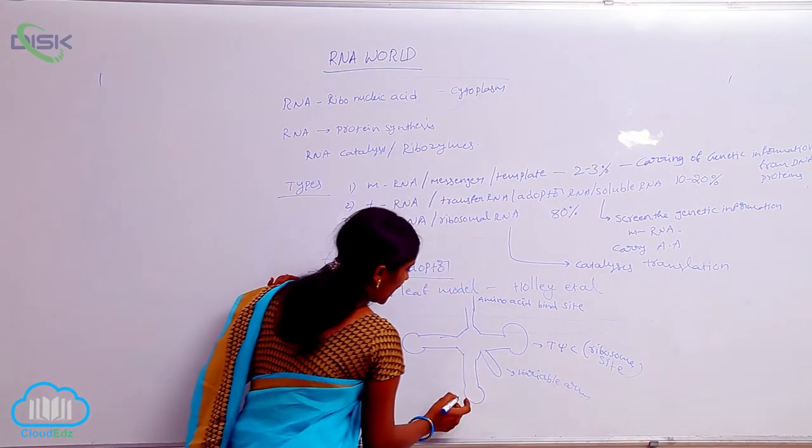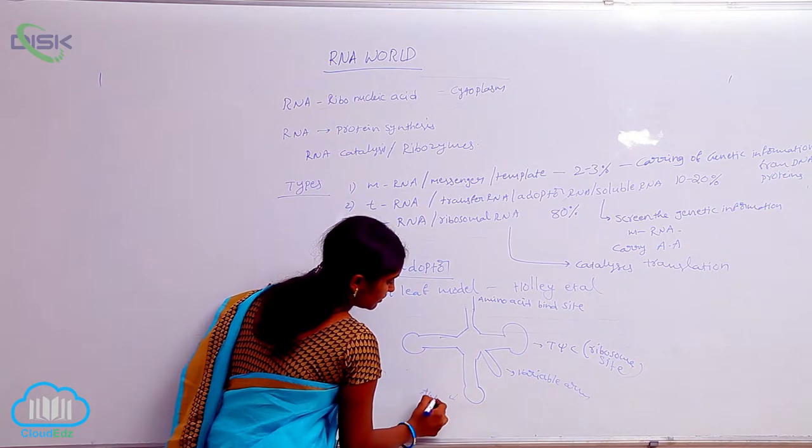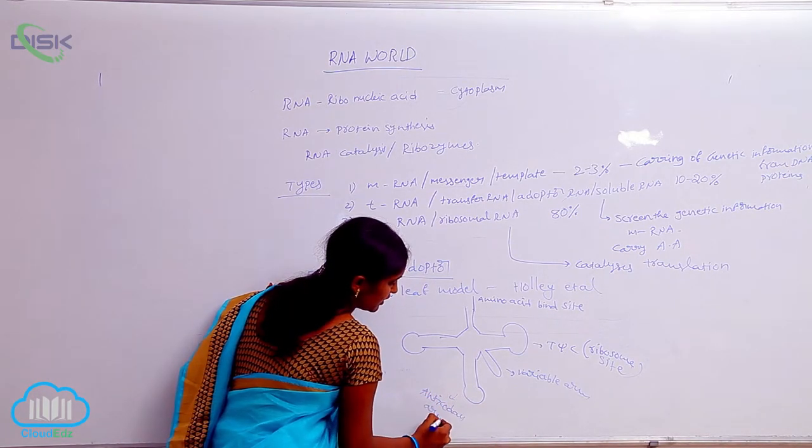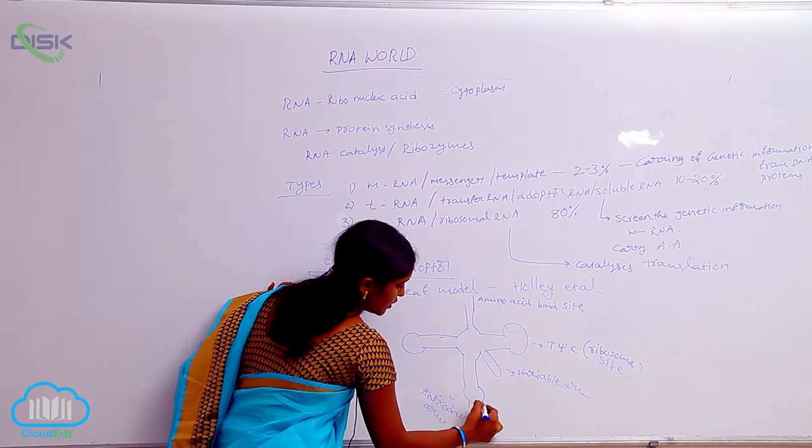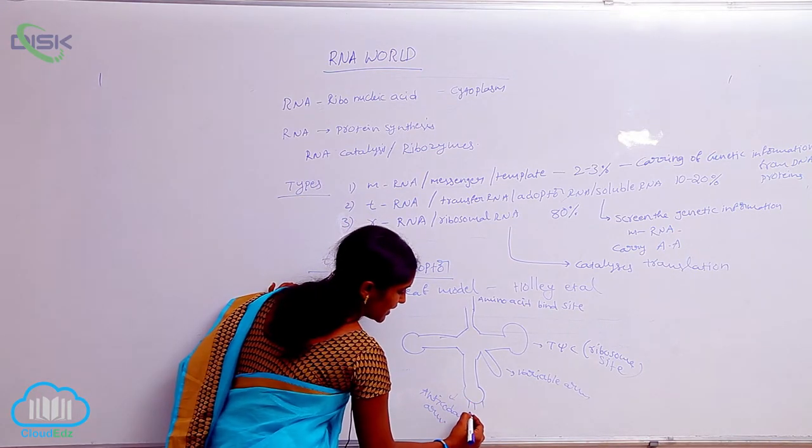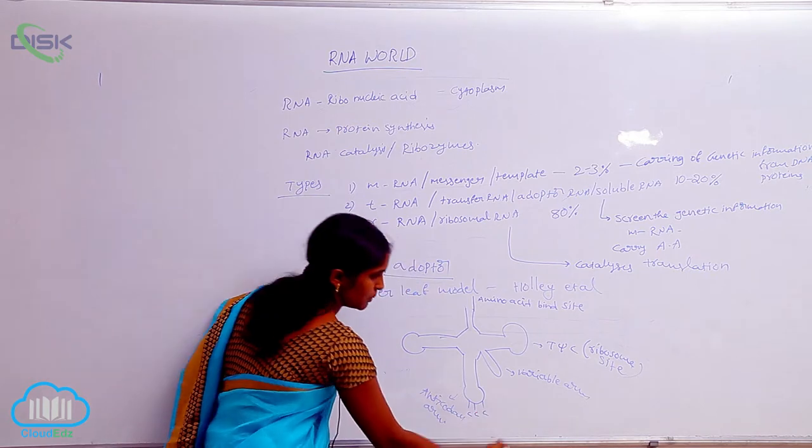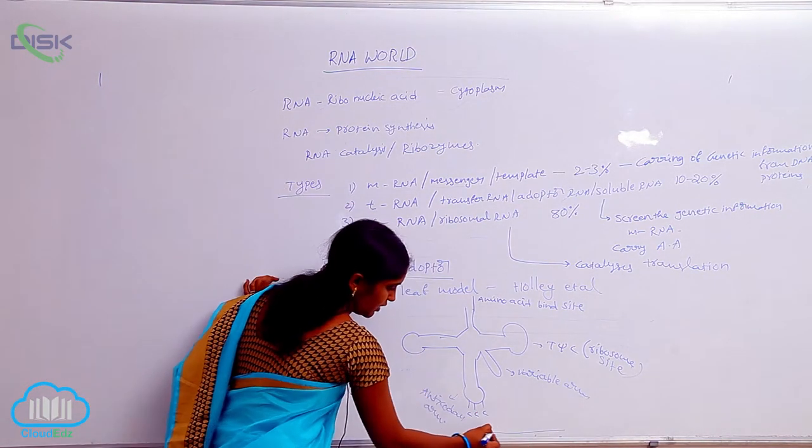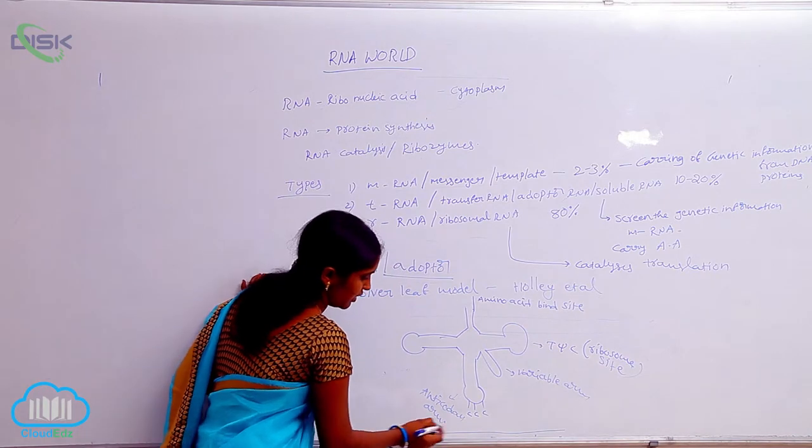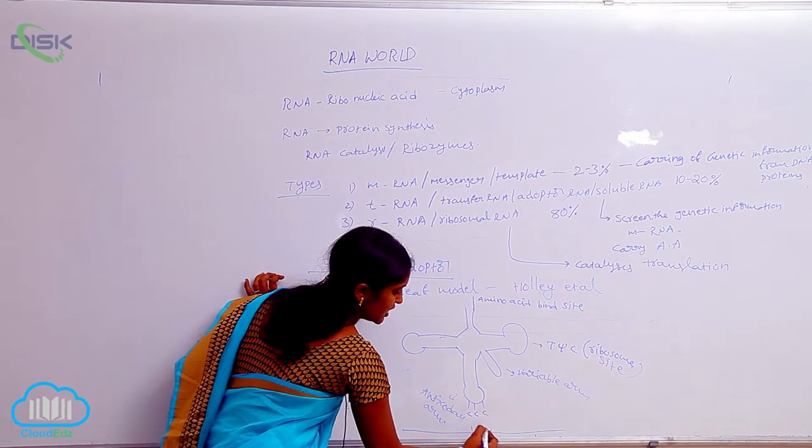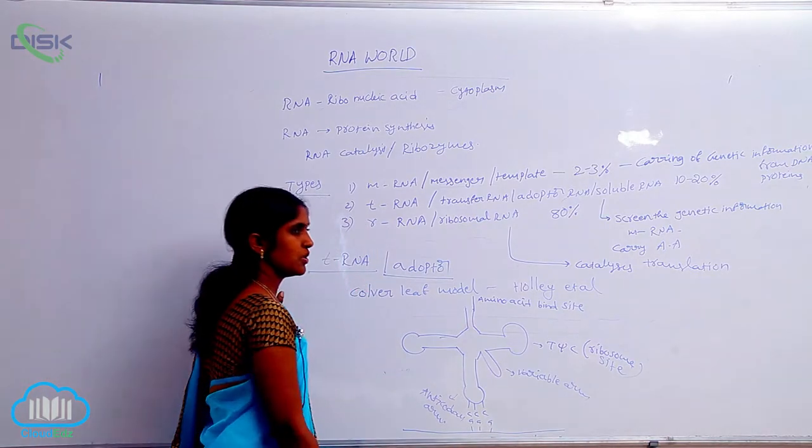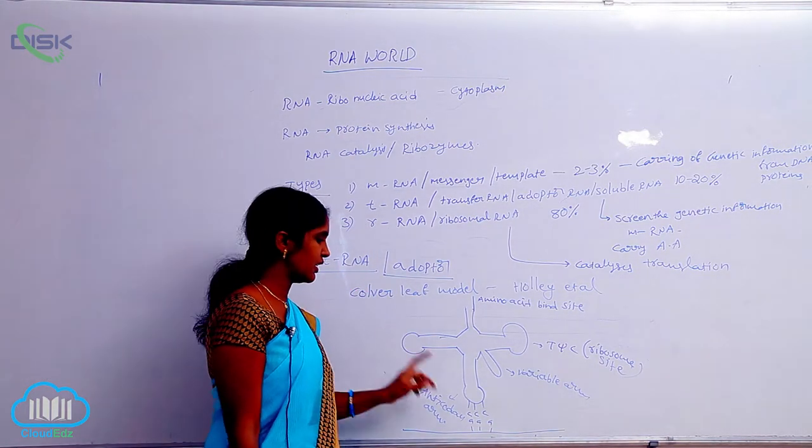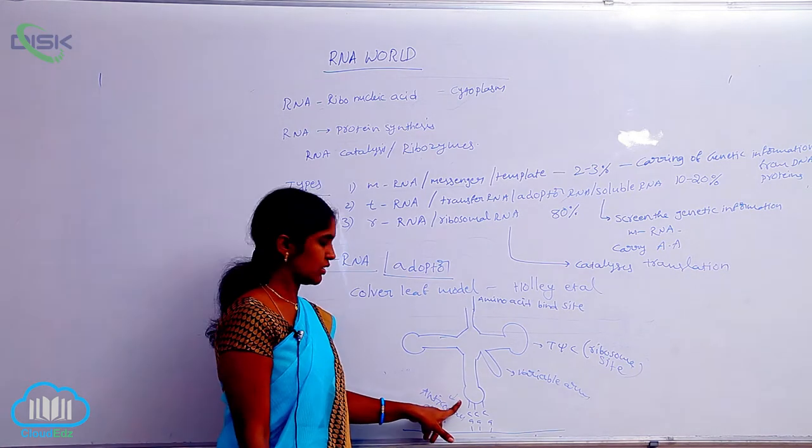And this is the anticodon arm. Anticodons are present here. For example, anticodon C-C-C is present. C-C-C is present means it screens mRNA and searches for G-G-G on the mRNA. You see, in the mRNA the codons are present, but whereas in tRNA they are anticodons. Both are complementary to each other.